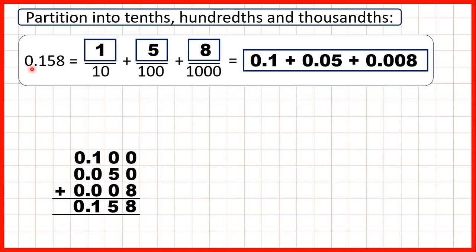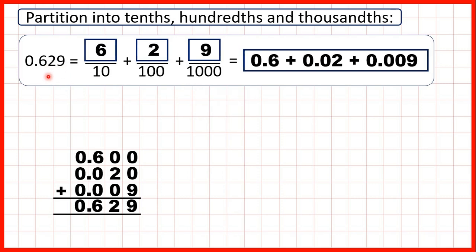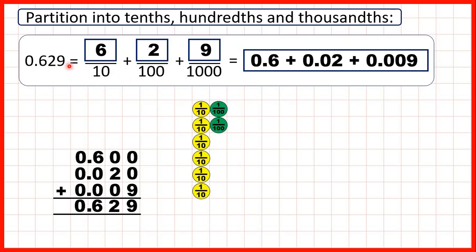Let's have another look at this first question. 0.158 is 1 tenth, 5 hundredths and 8 thousandths. We can show the partition using place value counters as well. And for 0.629 we had 6 tenths, 2 hundredths and 9 thousandths.